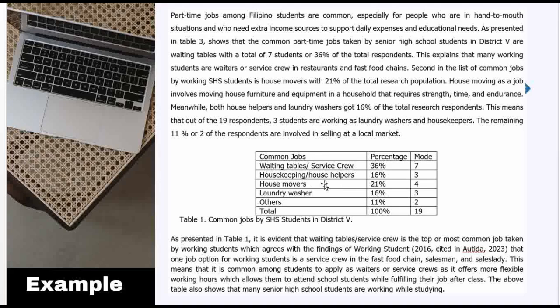As you can see, this is the table I was referring to. But before I present the table, I first gave context — meaning I explained what the result is about. Since my first statement of the problem is about the common part-time jobs of senior high school students in District 5, it is natural to write a short description or discussion about part-time jobs.